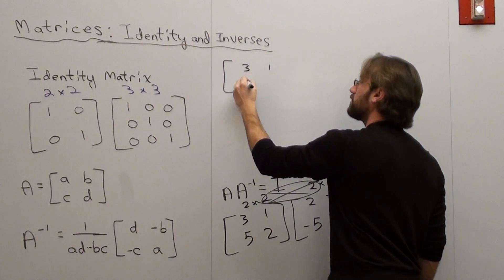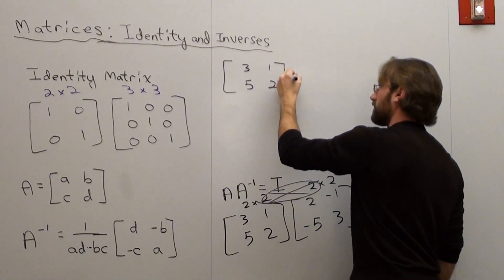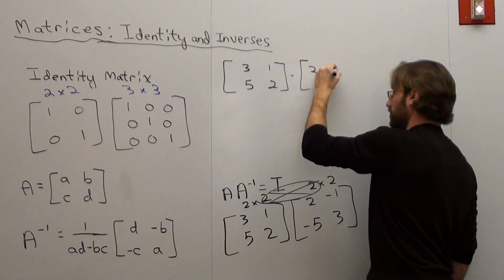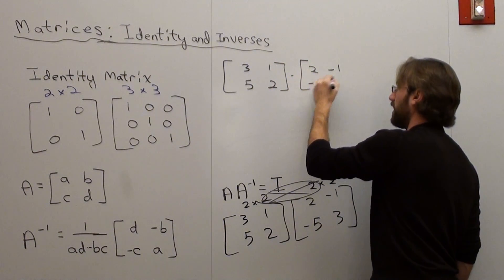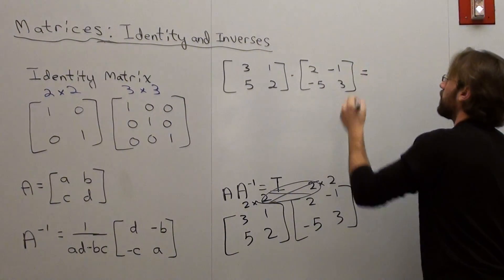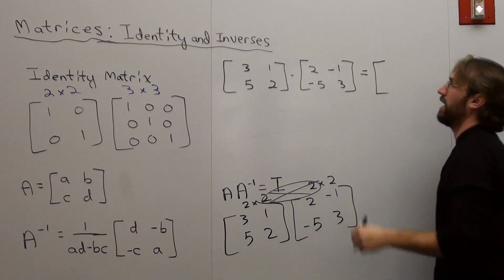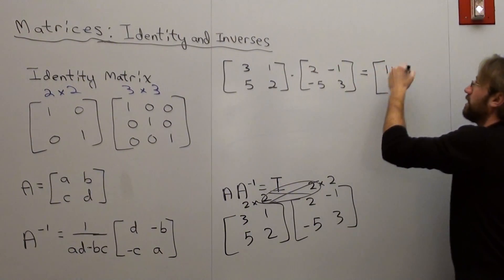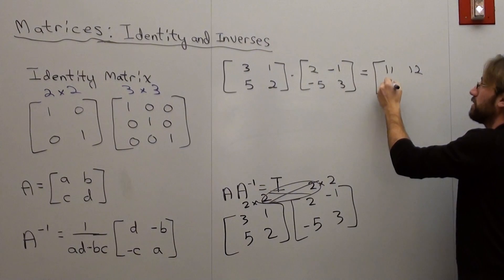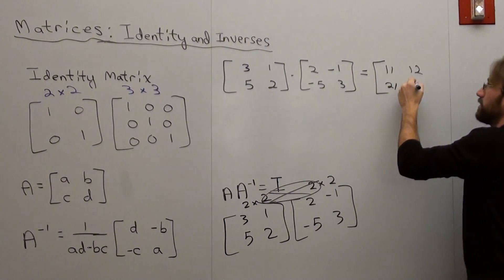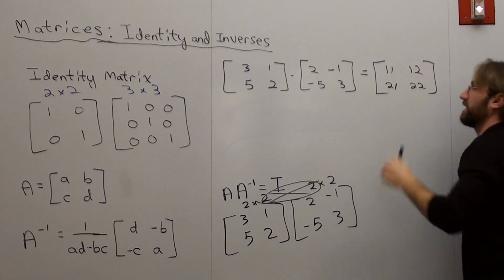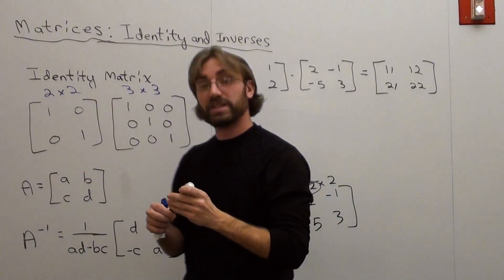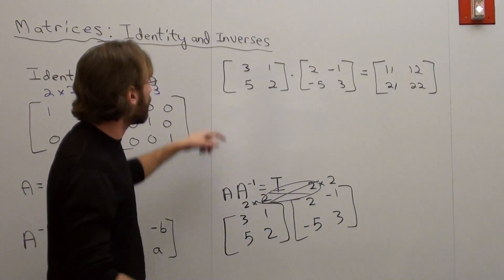So here we go. 3, 1, 5, 2 times 2, negative 1, negative 5, and 3 equals, it's row 1 column 1, row 1 column 2, row 2 column 1, row 2 column 2. Just categorize it like that because it makes it a lot easier for students later on.